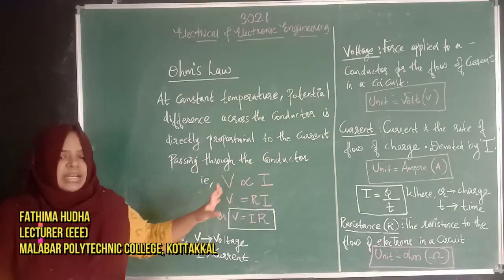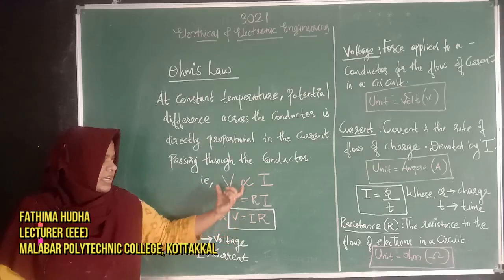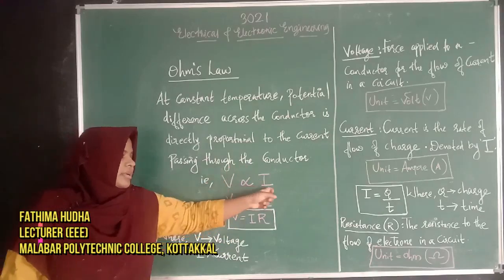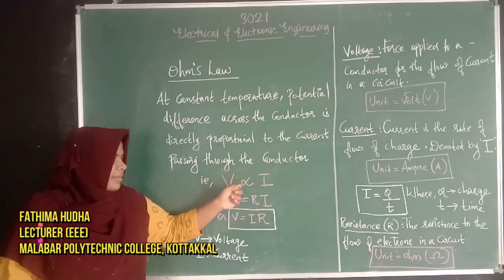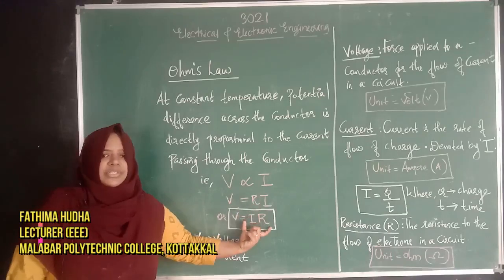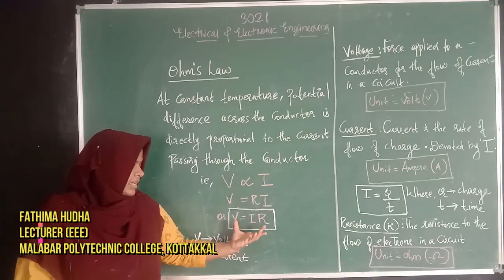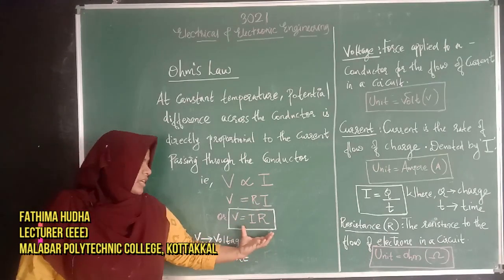This is the relationship of V, I, and R. V is proportional to I. This gives the equation V equal to IR, which is the Ohm's Law equation.